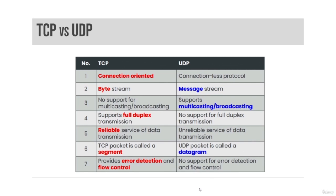UDP is a simpler and faster cousin to TCP. UDP is commonly used for applications that are lossy or can handle some packet loss, such as streaming audio and video. It is also used for query response applications, such as DNS queries.